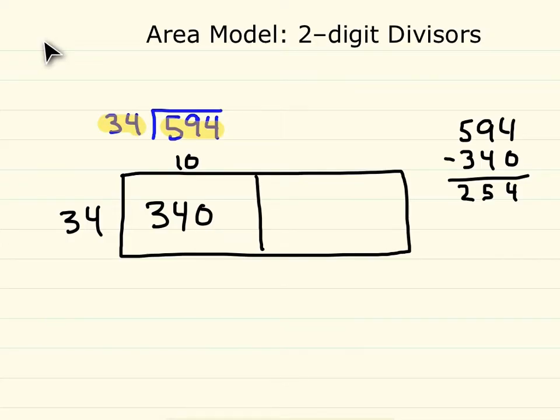So now let's use a big chunk of 254. Well, we can no longer use 34 times 10, so let's use 34 times 5.